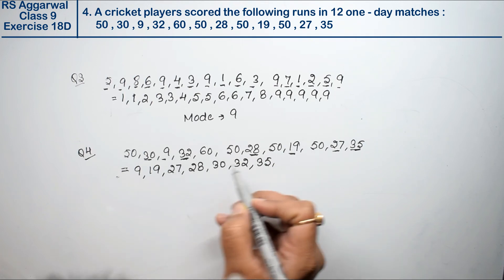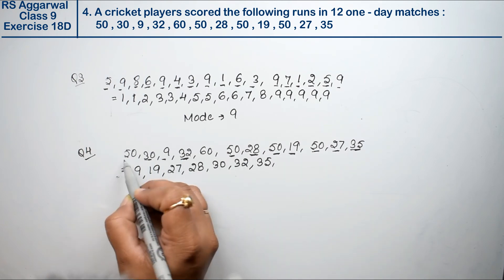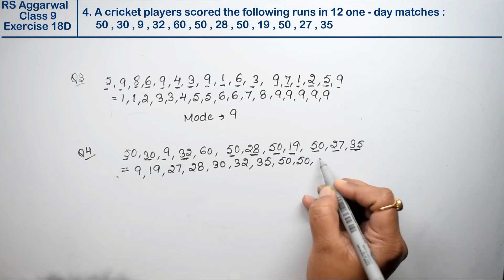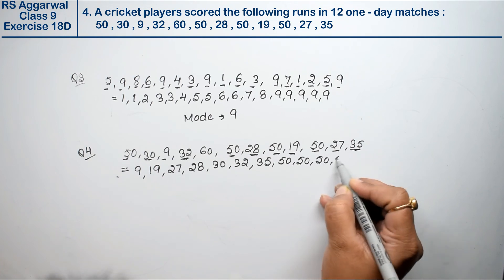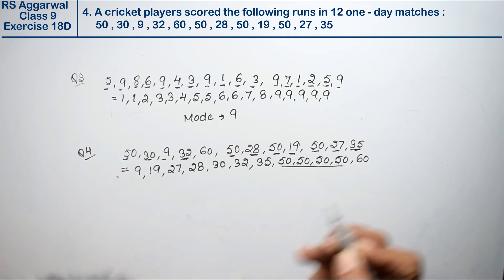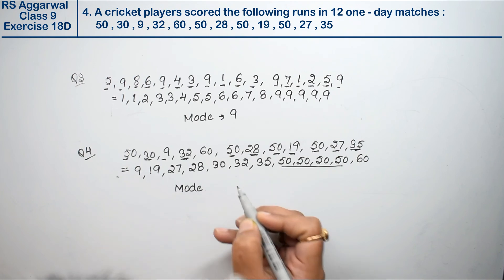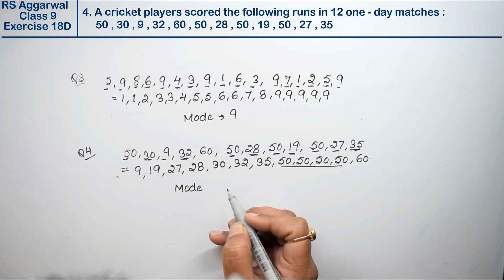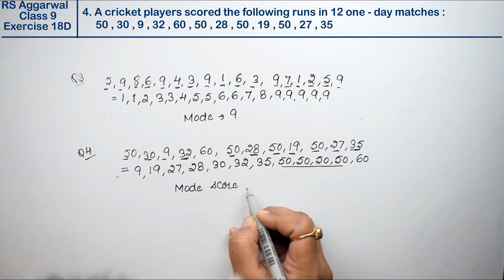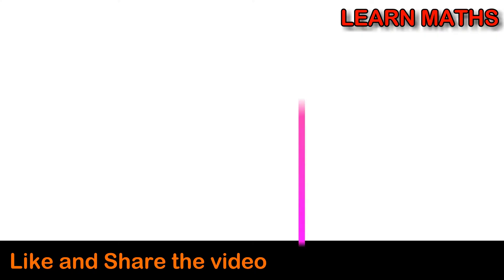Then 50 appears 1, 2, 3, 4 times - four times. After that, it is 60. So we know that 50 repeats the maximum times. So what is the modal score? The mode, the modal score is 50 runs. That is our answer.